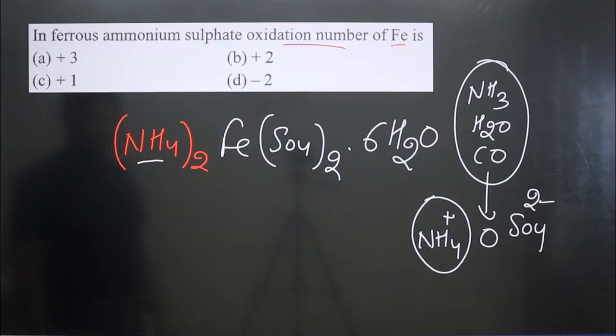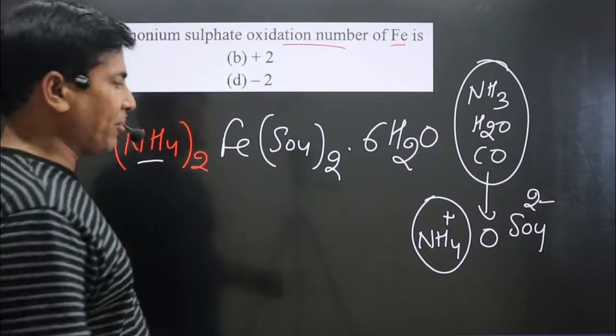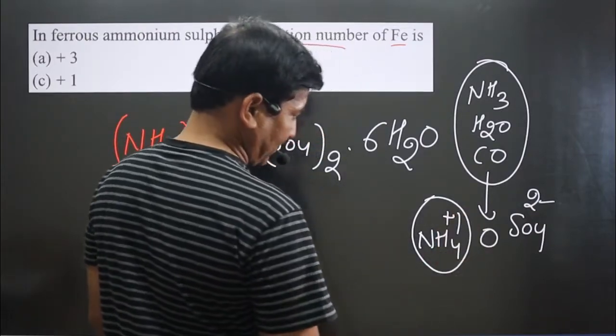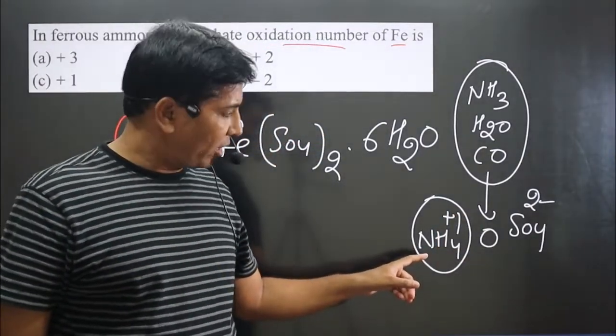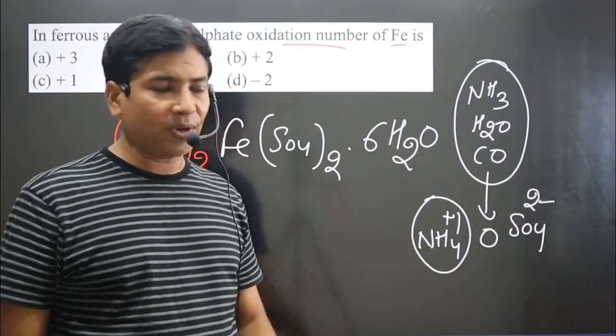Like phosphate, PO4^3-, carries minus three charge. Sulfate charge is minus two, ammonium ion charge is plus one. This is a positive polyatomic ion, this is a negative polyatomic ion.